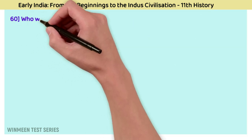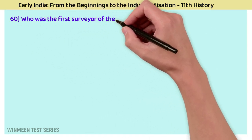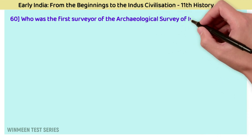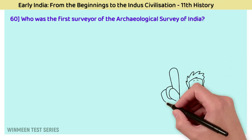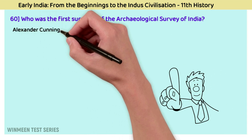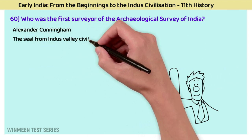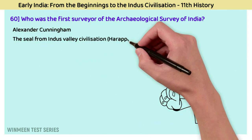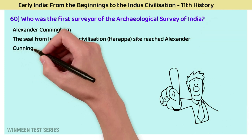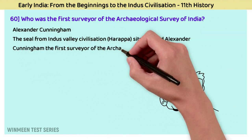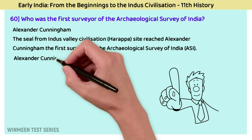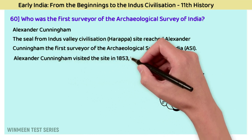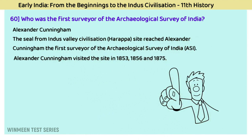Question 60: Who was the first surveyor of the Archaeological Survey of India? The answer is Alexander Cunningham. A seal from the Indus Valley civilization at Harappa reached Alexander Cunningham, the first surveyor of the Archaeological Survey of India (ASI). Alexander Cunningham visited the site in 1853, 1856, and 1875.